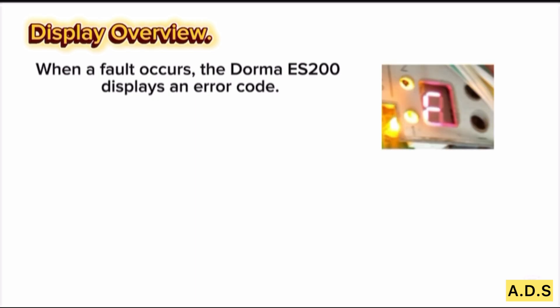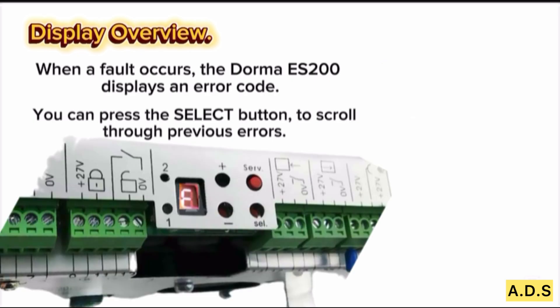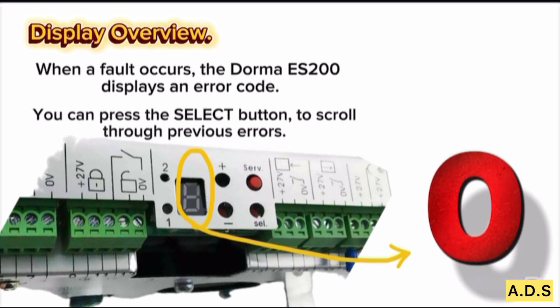Display Overview: When a fault occurs, the DORMA ES-200 displays an error code. You'll see a flashing E, followed by a number or letter. This shows the most recent error. You can press the Select button to scroll through previous errors. If there's no issue, it will show zero.